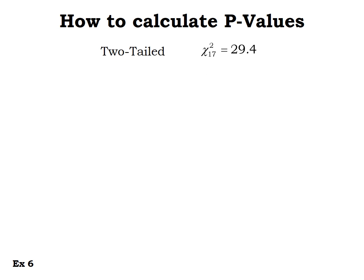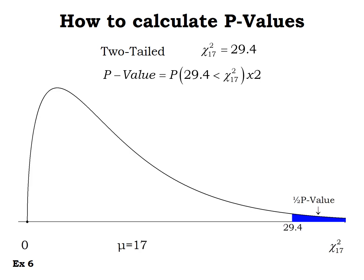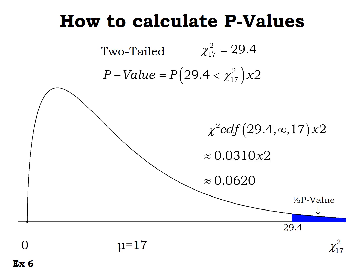For a two-tailed test with chi-squared score 29.4, since 29.4 is in the right tail, we treat it like a right-tailed test: find the area to the right and double it. The area in the right tail is half the p-value. Using chi-squared CDF from 29.4 to infinity with 17 degrees of freedom and doubling that, the p-value is 0.0620.